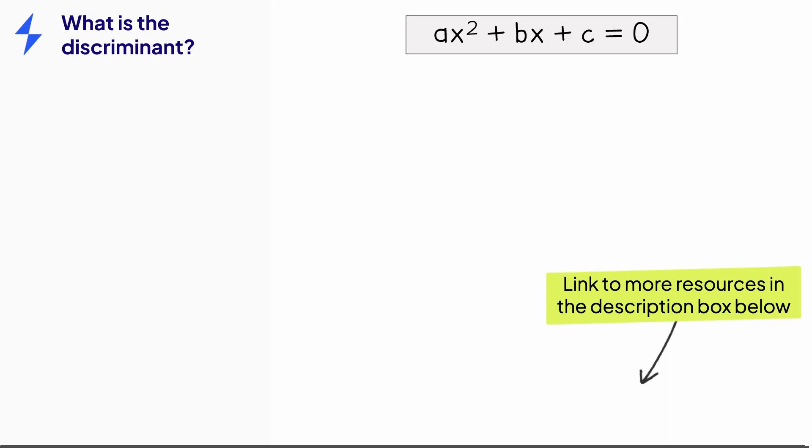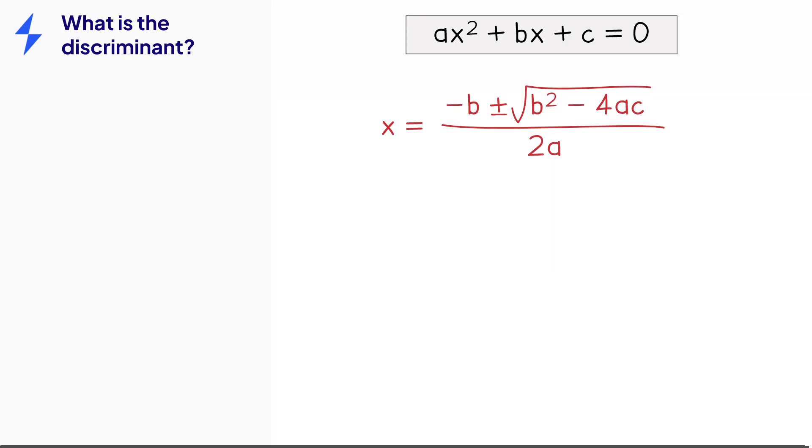Let's start by looking at the solutions of a quadratic equation using the quadratic formula. The expression under the square root symbol, b squared minus 4ac, is called the discriminant.